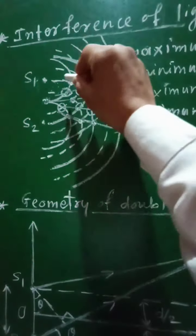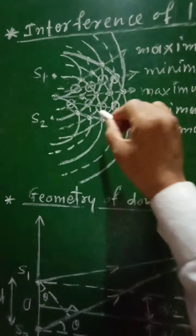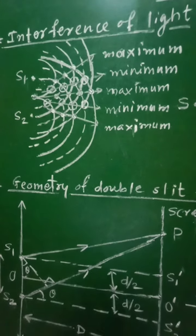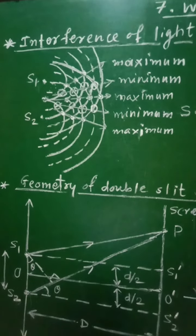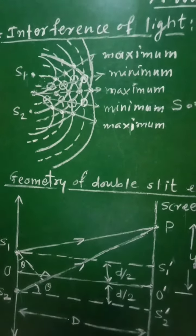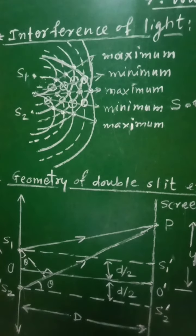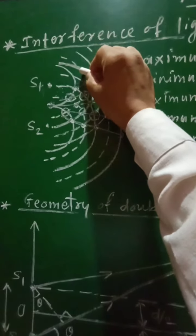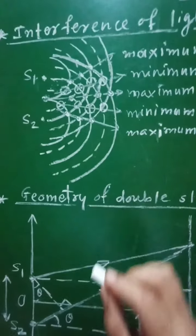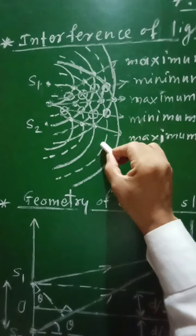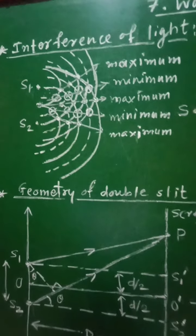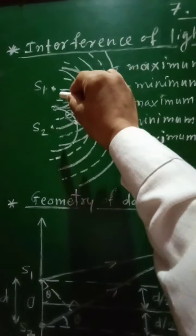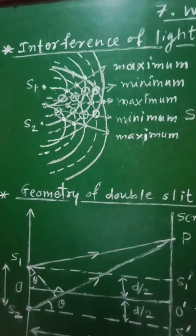For simplicity, let us consider the light waves emitted towards the right of sources S1 and S2. As light waves are transverse in nature, they will emit light waves in the form of alternate crests and troughs. In this diagram, the continuous lines represent the crest and the dotted lines represent the trough. When alternate crests and troughs originate from sources S1 and S2, they will get superimposed.